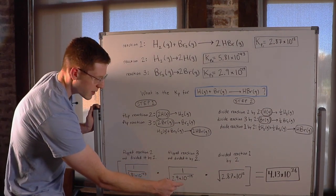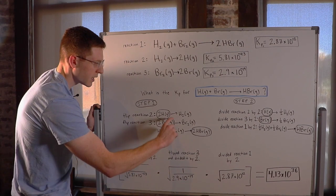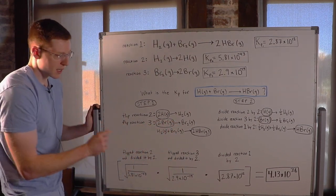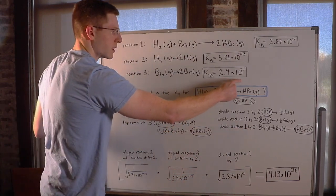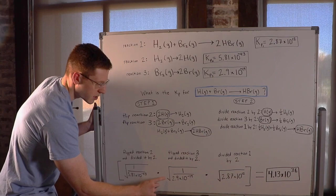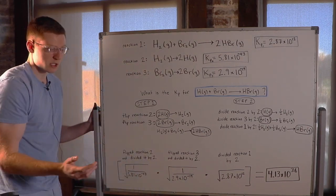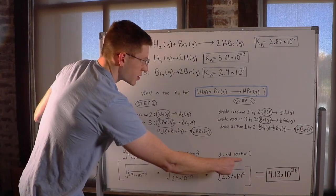I did the same exact thing for reaction 3. I had to take the inverse because I flipped the reaction, and then I also divided it by 2. So I took the inverse of 2.9 times 10 to the negative 19, and then the square root of the whole thing because I divided it by 2.